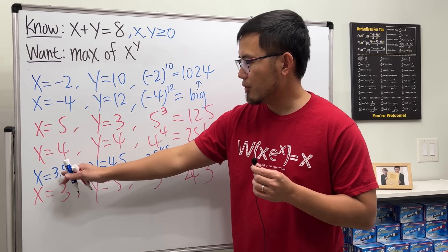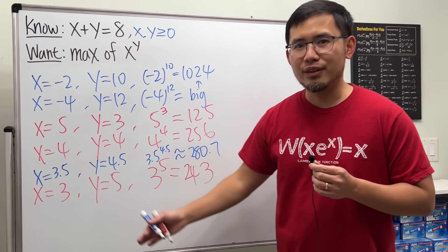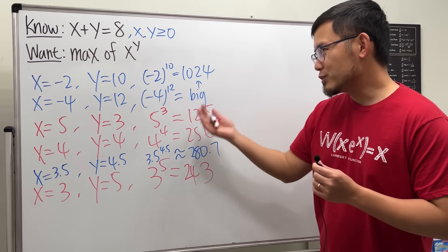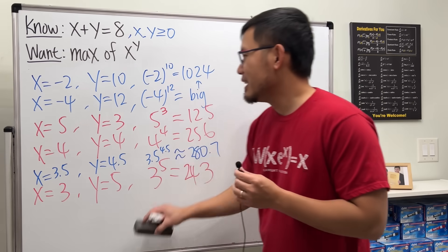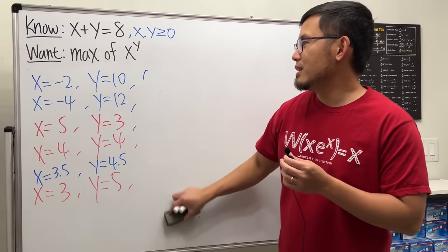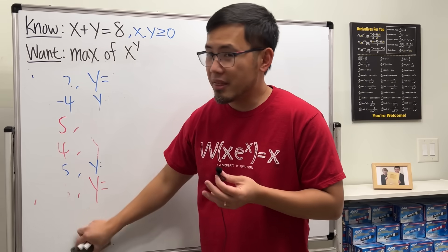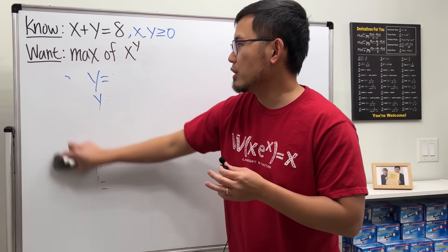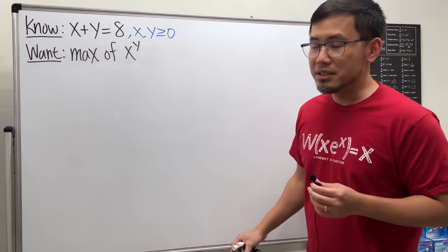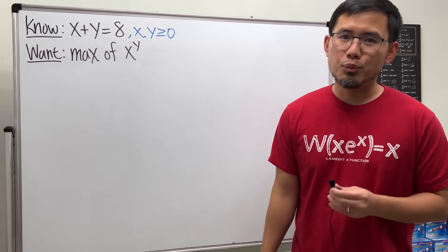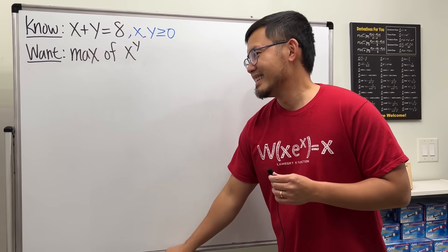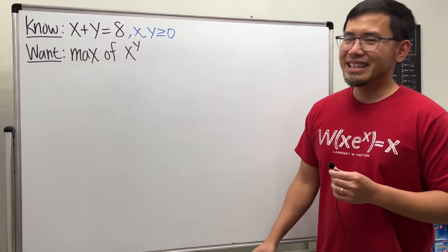What if x is like 3.51 or something? Of course, we're not going to just keep guessing and checking. Definitely there's a way to do it — we just use the calculus 1 method. This is just an optimization question. But it's not so easy, so let's see how we can do this.